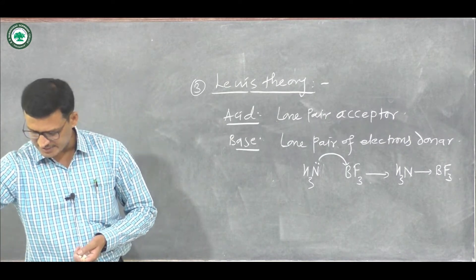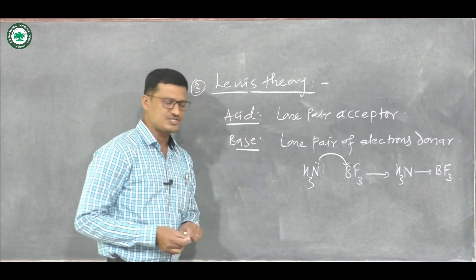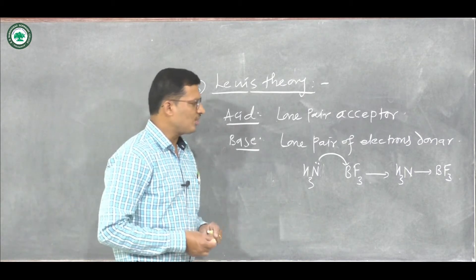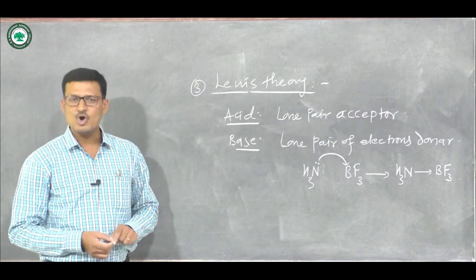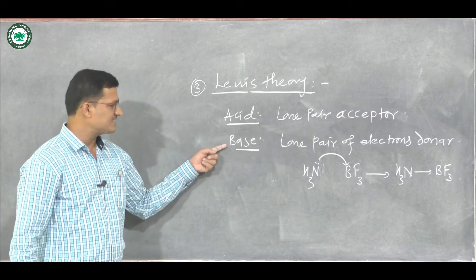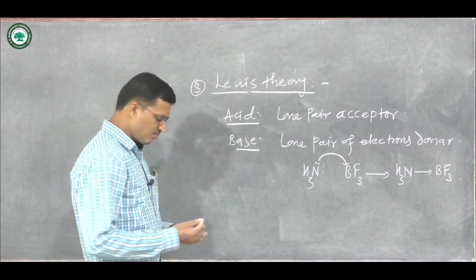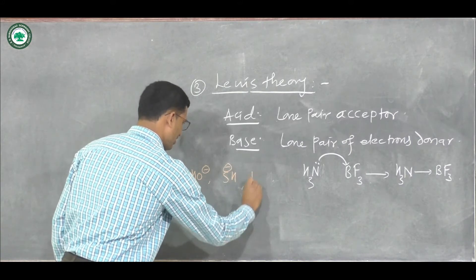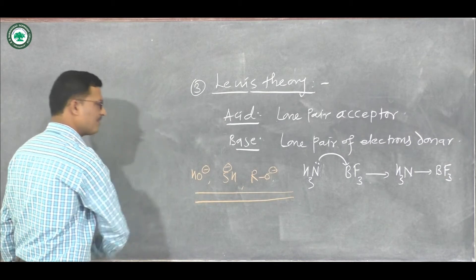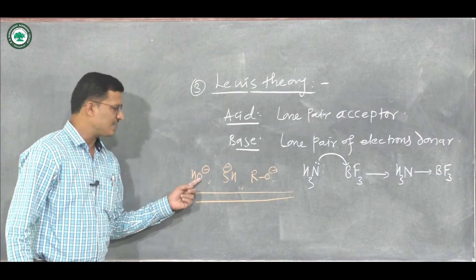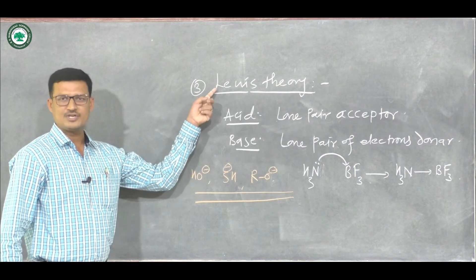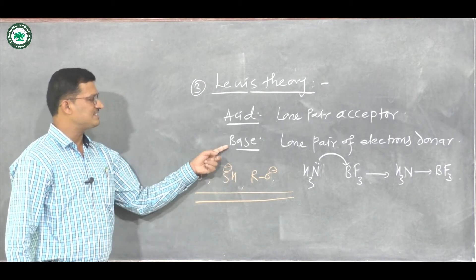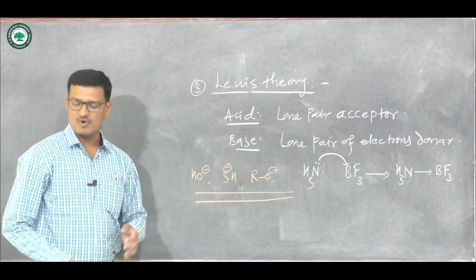The Lewis definition is a much more generalized picture of acids and bases. All molecules which have a negative charge or non-bonding pair of electrons are considered as bases. For example, OH⁻, RO⁻ — all species having a negative charge on them behave as bases according to Lewis theory.